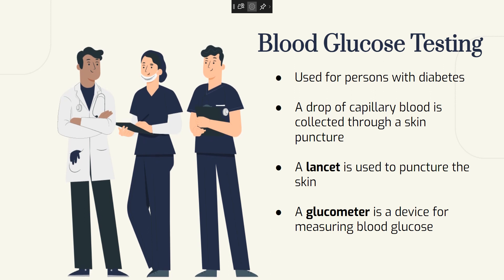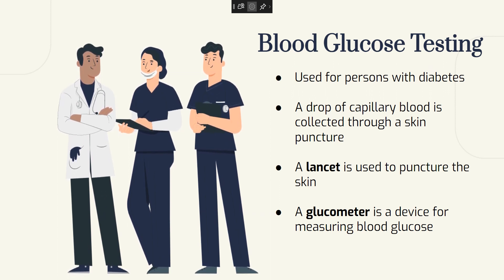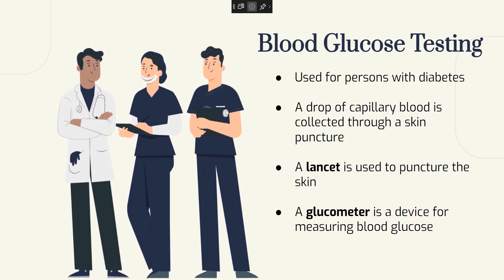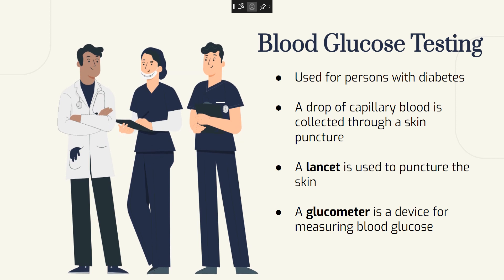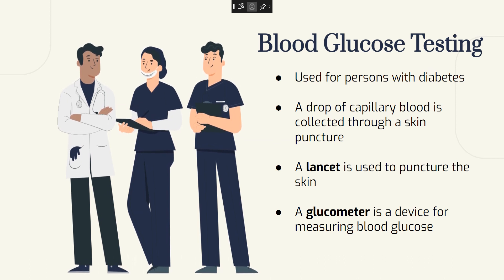Blood glucose testing is used for persons with diabetes. A drop of capillary blood is collected through a skin puncture. The fingertip is the most common site. Inspect the puncture site for trauma and skin breaks. Do not use swollen, bruised, cyanotic, scarred, or calloused sites, as such areas have poor blood flow. Use the side toward the tip of the middle finger or ring finger. Do not use the center, as this site has a lot of nerve endings. In children, the third ring finger is used. In infants, the plantar surface of the heel is used.